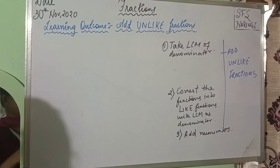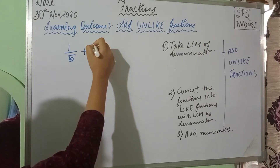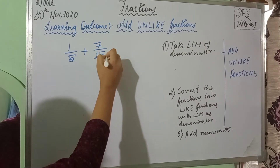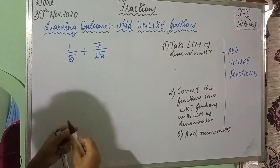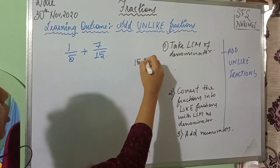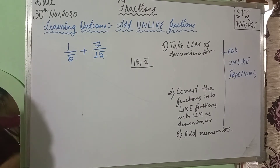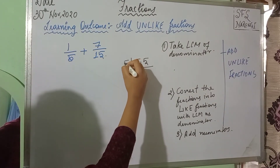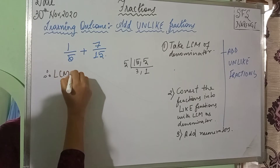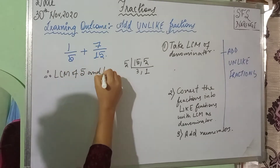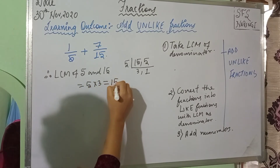Let us try another problem: 1 by 5 plus 7 by 15. Here, the LCM of 5 and 15 — you can do the prime factorization. 5 and 15 are both divisible by 5. So 5 threes are 15, 5 ones are 5. Therefore, the LCM of 5 and 15 is equal to 5 multiplied by 3, that is equal to 15 itself.